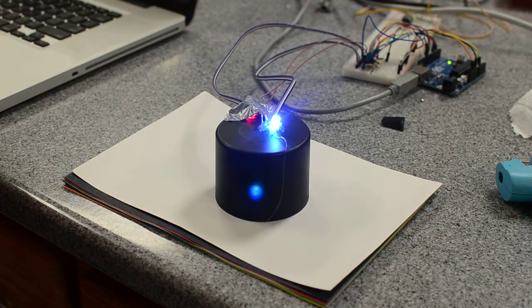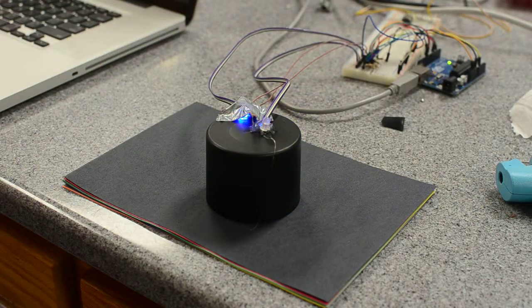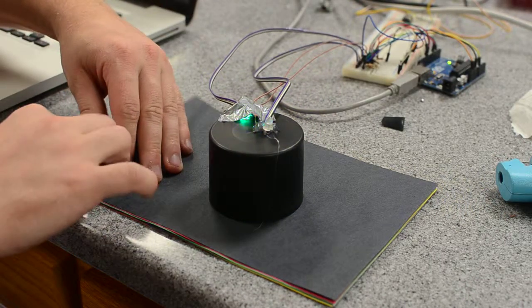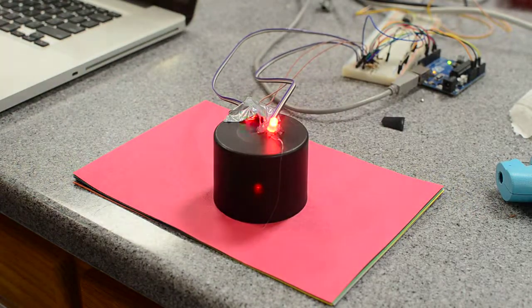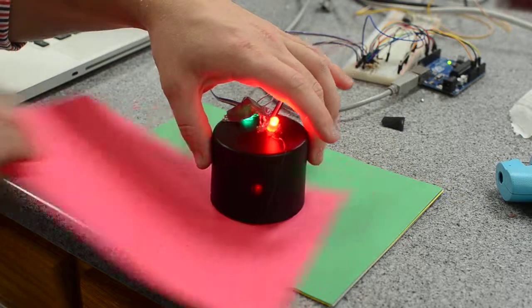If we put it back on the white paper, we'll see that it turns a whitish color. Black will actually make it turn off. As we cycle through the different colors of paper, we'll see that it is able to catch on to what color it is fairly quickly.